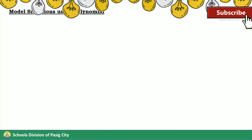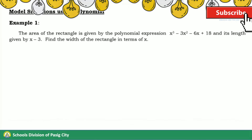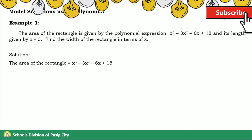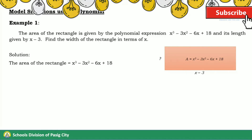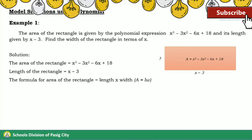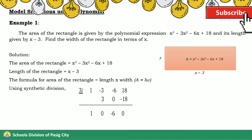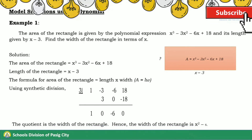Let us now have model situations using polynomials. Example 1: The area of a rectangle is given by the polynomial expression x³ − 3x² − 6x + 18, and its length is given by x − 3. Find the width of the rectangle in terms of x. Using synthetic division, the quotient is the width of the rectangle. Hence, the width of the rectangle is x² − 6.